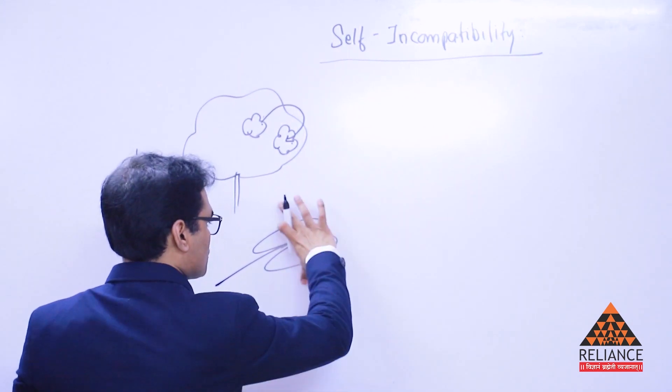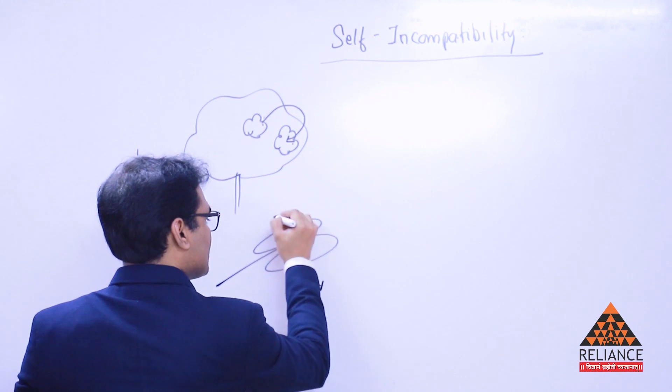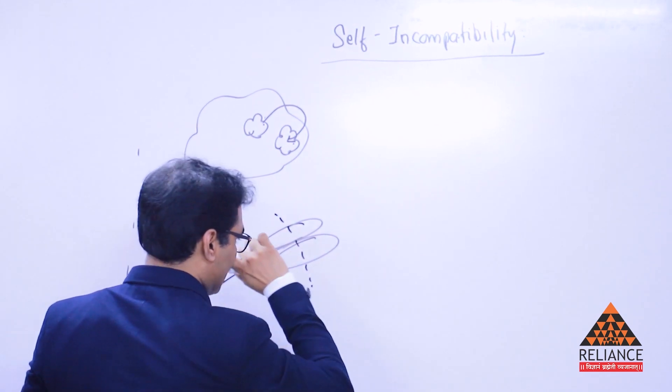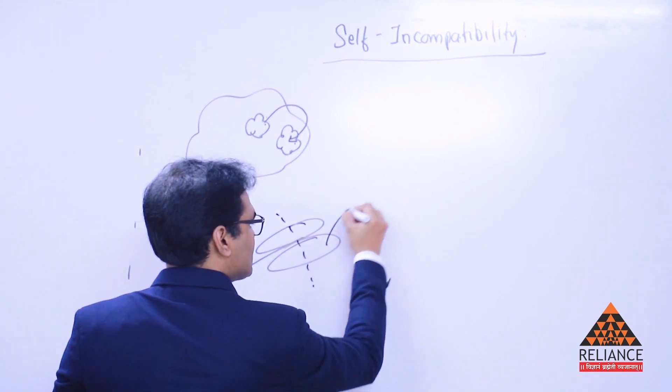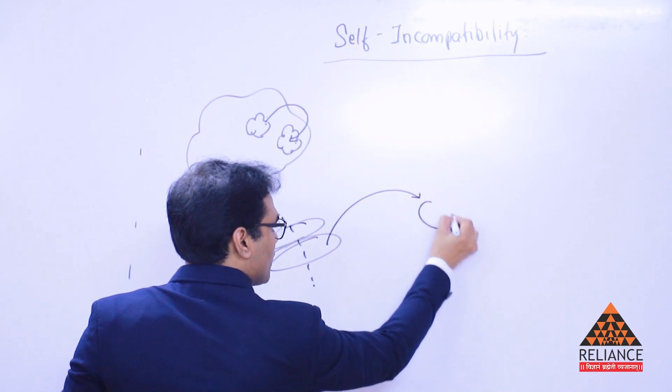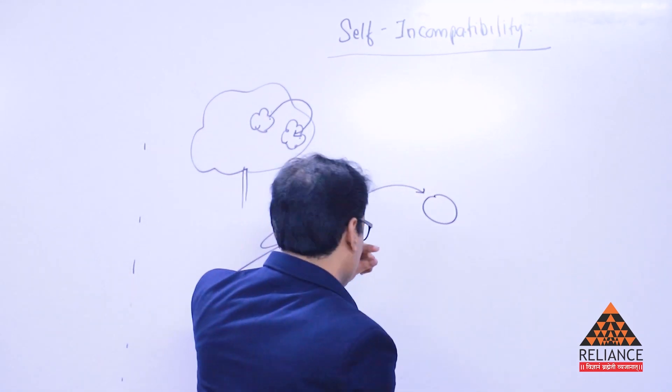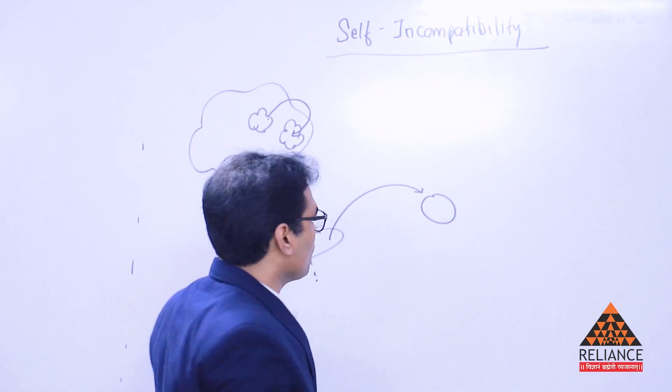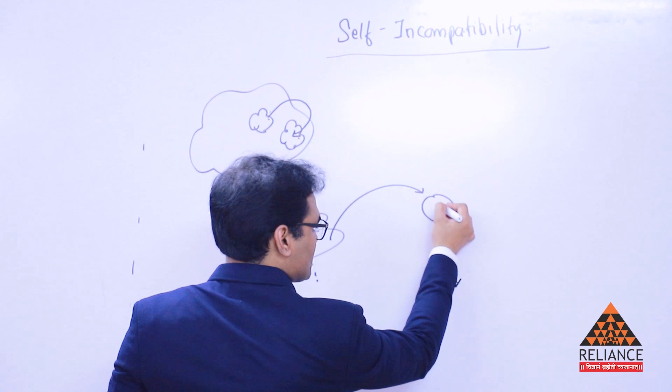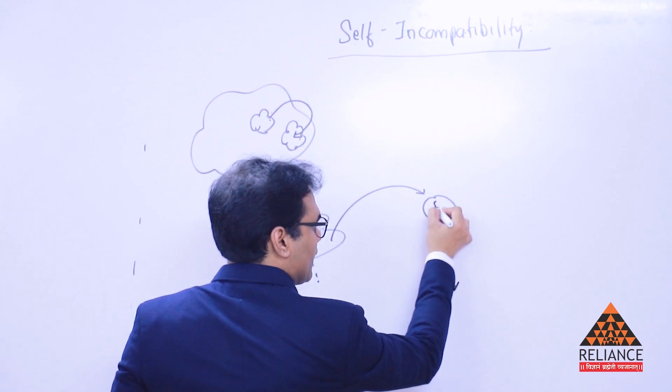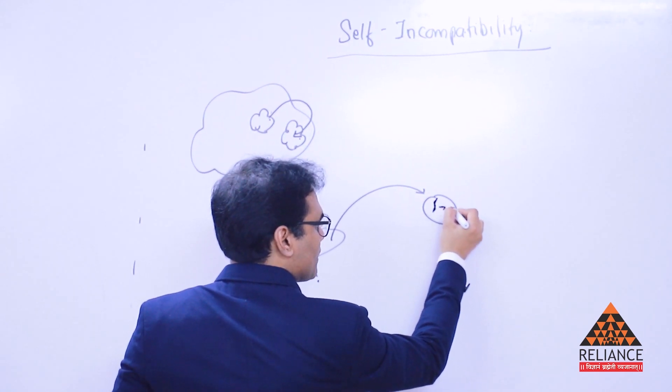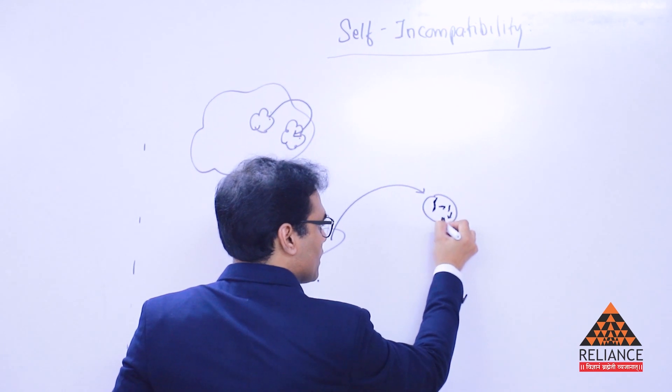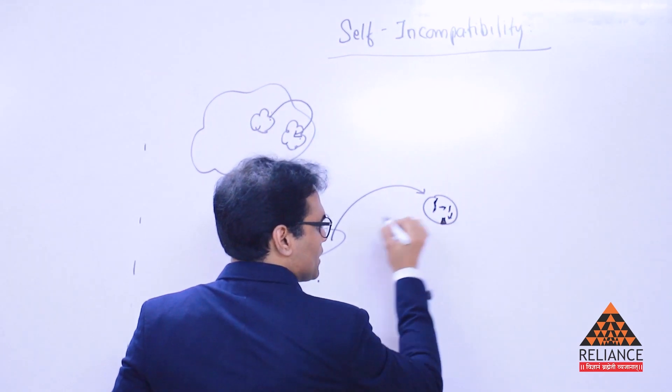In the anther, pollen grains are formed here. Now these pollen grains, let's say the pollen grains are coming out. Now when pollen grains come, then in that pollen grain there's definitely some nucleus. Okay, that nucleus has the DNA. DNA made RNA, RNA made some protein. Now some such specific protein is formed.